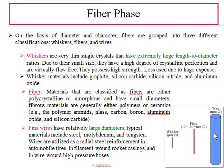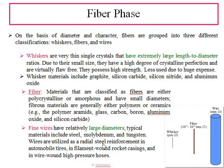Fibers come in between whiskers and wires. Due to very high price and expense, the use of whiskers is limited, and fine wires are also limited due to some property issues. Some examples of fine wires are steel and tungsten wires, which are used as radial steel reinforcement in automobile tires. The fiber part comes in between these two categories.